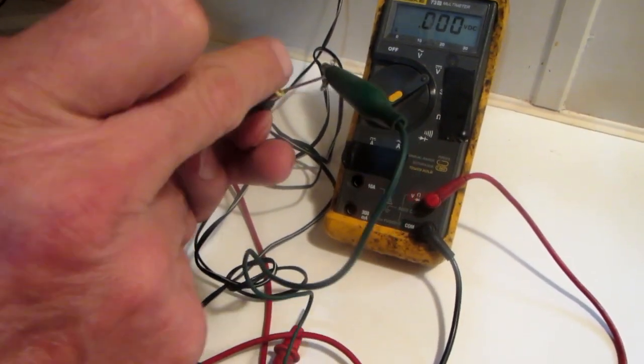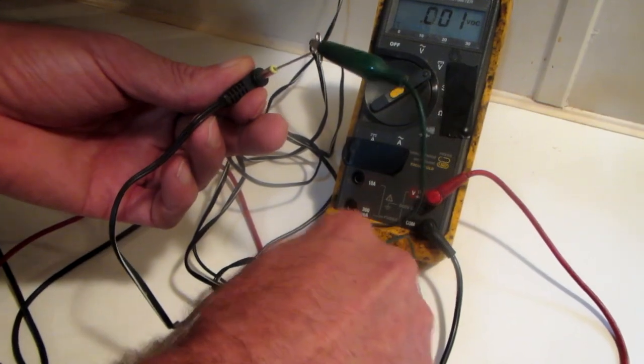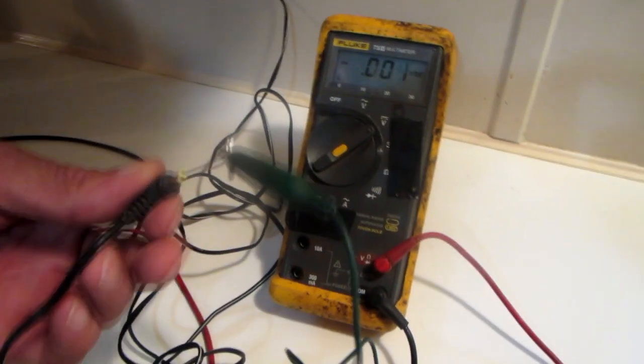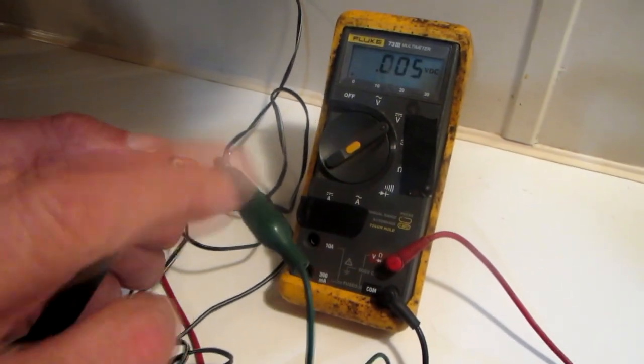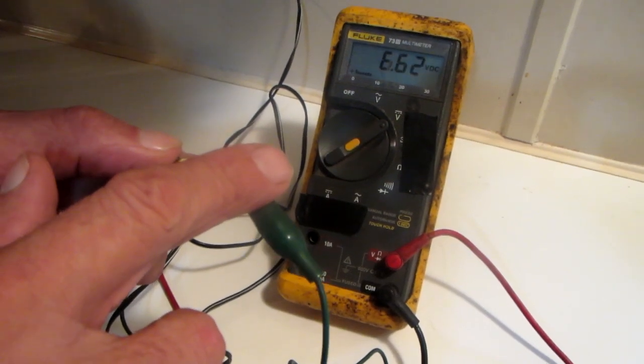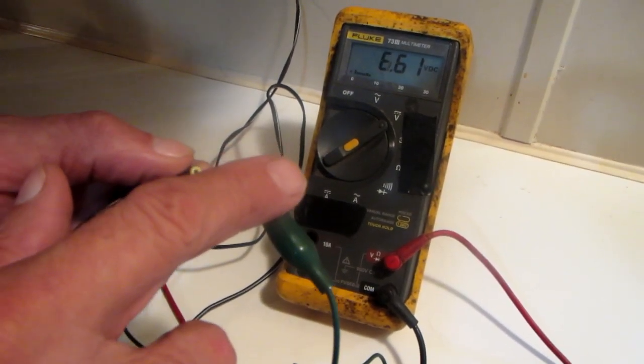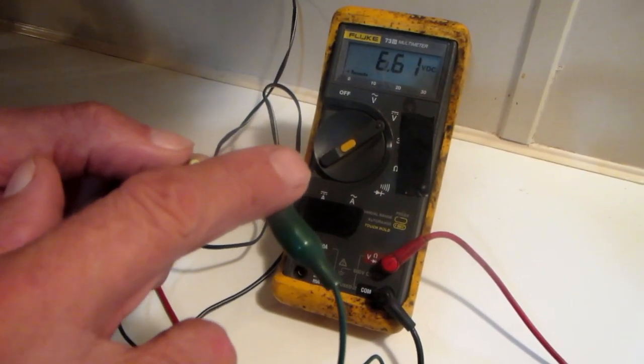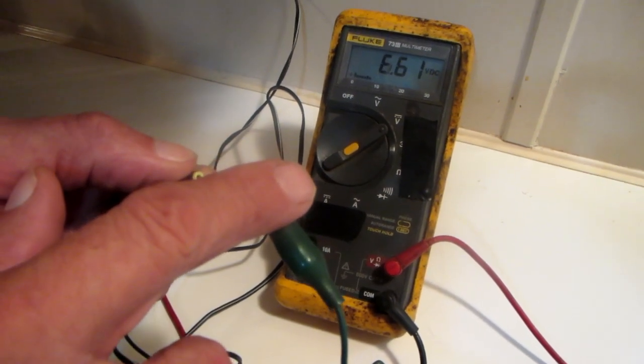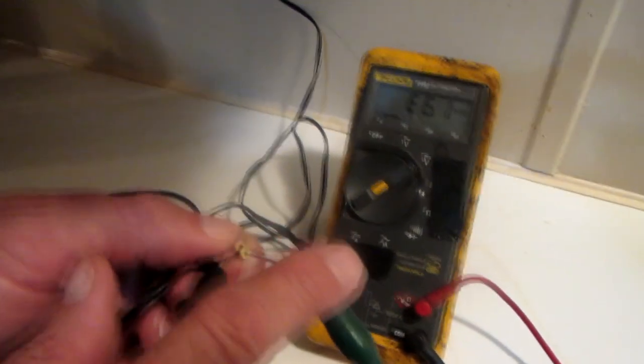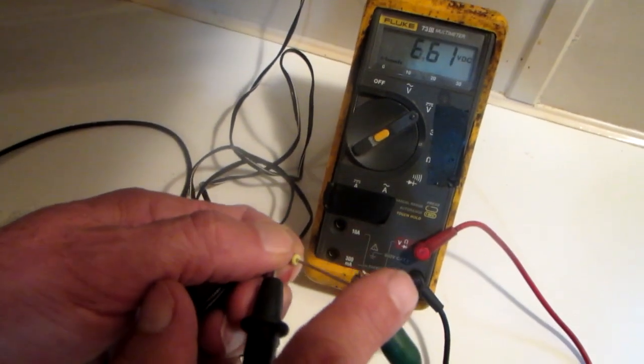You can see the 4.5 volt charger is putting out 6.6 volts, so it's a good charger. And that's an easy way to check these chargers out with a multimeter. Hopefully this was helpful. Thank you.